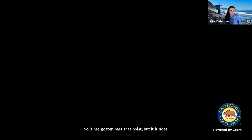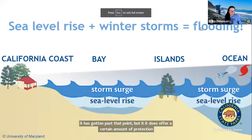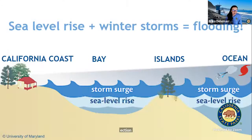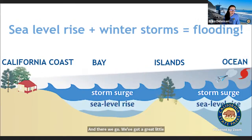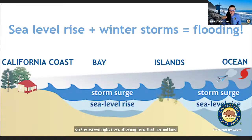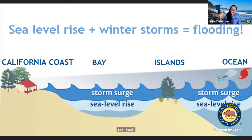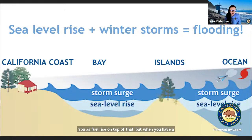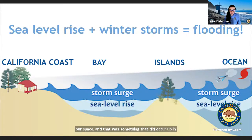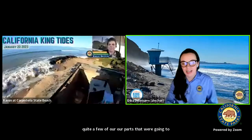That's really important to think about. We've got a great diagram up on the screen showing how the normal sea level, with sea level rise on top of that, and when you have a storm surge, it's going to push that water even further inland into our parking lots, campgrounds, and streets. That did occur in quite a few of our parks that we're going to be seeing as we travel along the coast today.